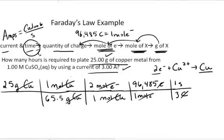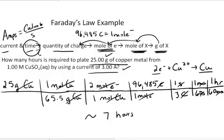But the question was in units of hours. If I stopped here it would be a very large number, so I'm going to convert to hours. There's 60 seconds in one minute, and there are 60 minutes in one hour. When I do the math, the seconds cancel, minutes cancel, and I end up with about seven hours to plate out 25 grams of copper using a three amp current.